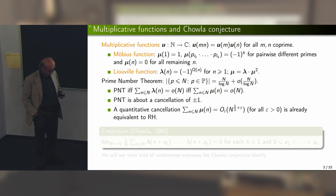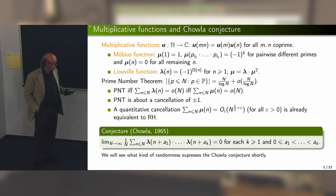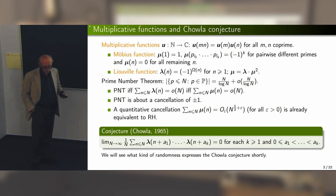As Terence Tao already mentioned, if you think about quantitative cancellations, you encounter the Riemann hypothesis. So let's now go to one more unsolved problem: the conjecture by Chowla from 1965. This conjecture tells us that all autocorrelations of the Liouville function vanish. We will see in a while what kind of randomness this expression is about.